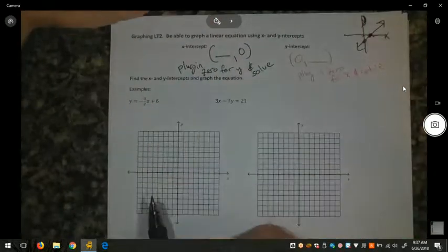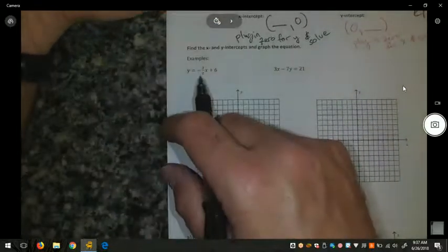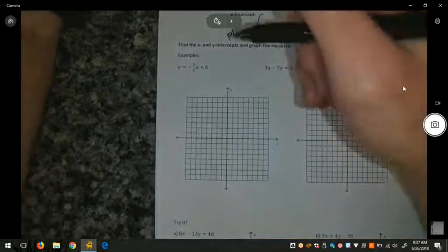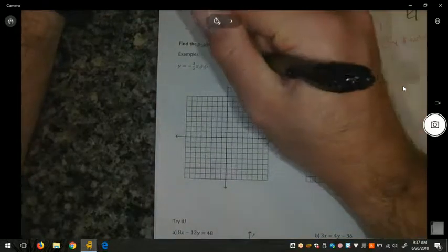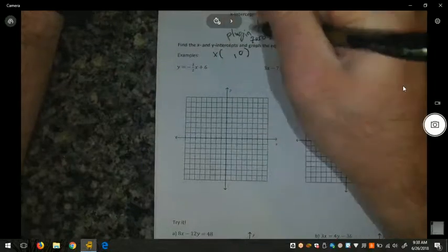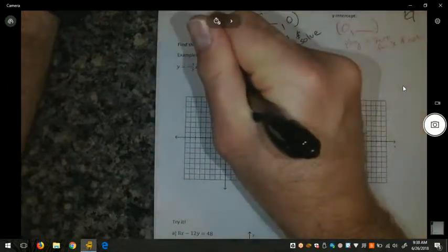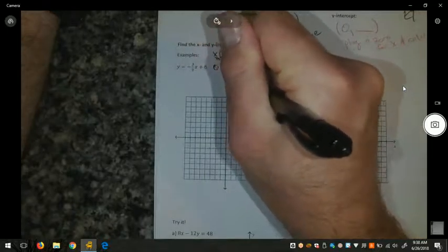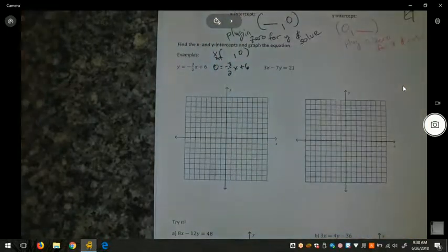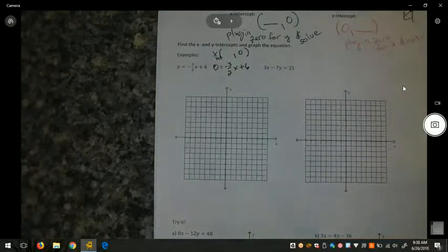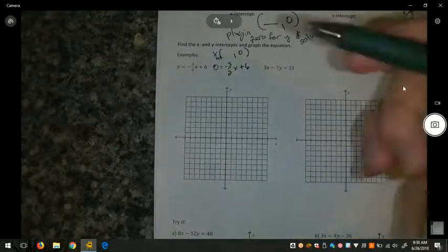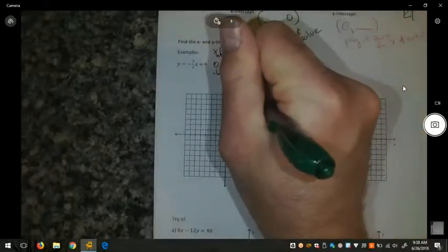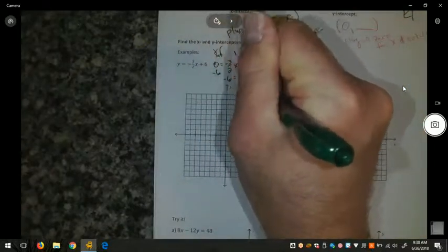So finding the x and y-intercepts to graph the equation. In this first example, we have y equals the opposite of 3 halves x plus 6. And so to find the x-intercept, I'm going to plug 0 in for y. 0 equals negative 3 halves x plus 6. To solve for x, I'm going to subtract 6 from both sides. So now I have negative 6 equals negative 3 halves x.